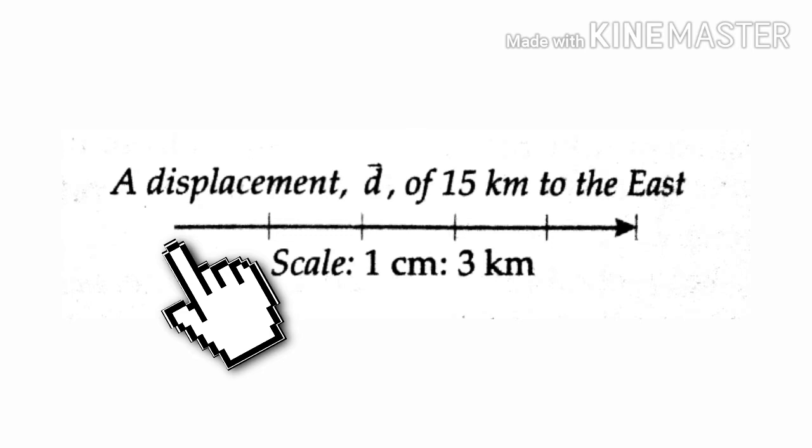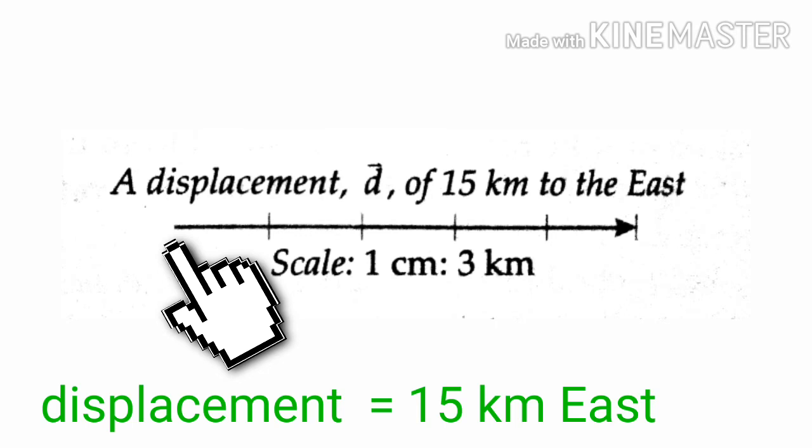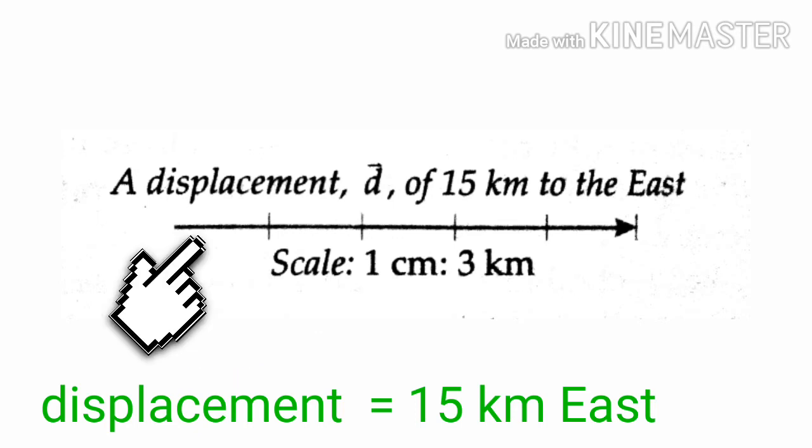Let us take the following example: a displacement of 15 kilometers to the east. A scale of 1 centimeter equals 3 kilometers. Here, the magnitude of displacement is represented by a line 5 centimeters long.